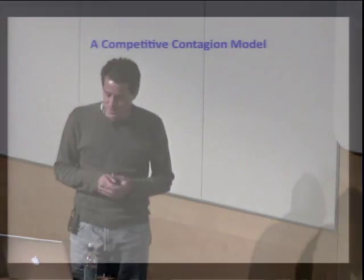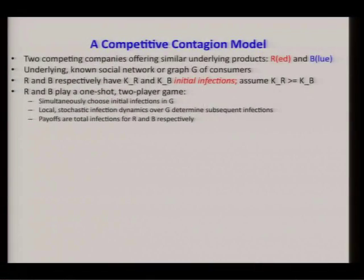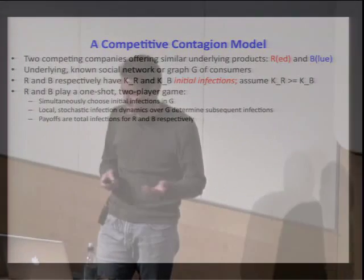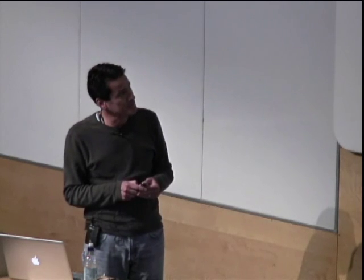Let me turn these stories into a model — a competitive contagion model. We imagine two competing companies offering similar underlying products: let's call them red and blue. There's an underlying known social network or graph G of consumers. The two players respectively have some number of initial infections they can seed in the network — the budget of red K_R and blue K_B.